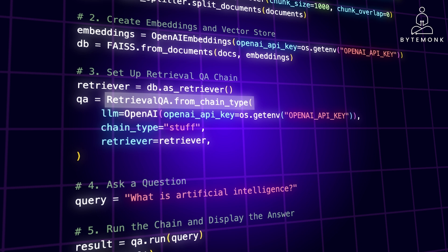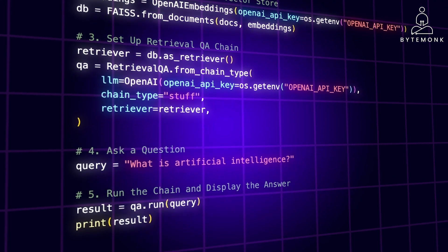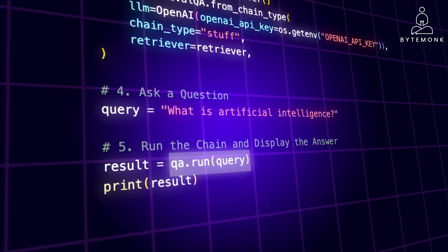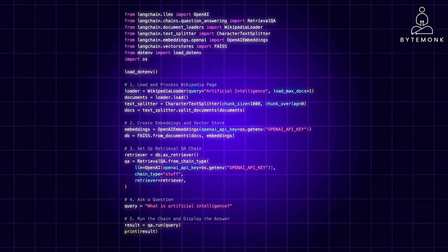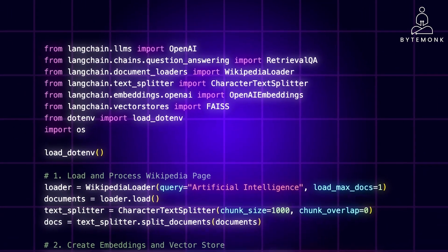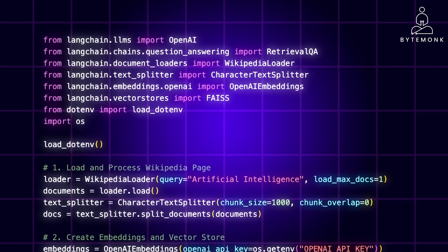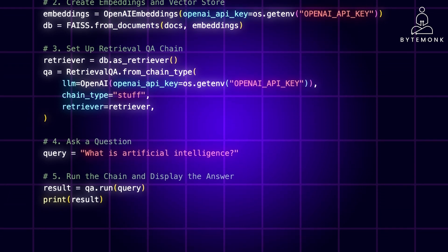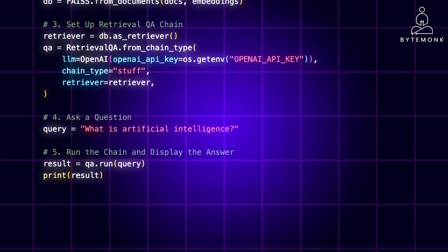RetrievalQA from chain type sets up the chain that takes the query, uses the retriever to find relevant documents, and then passes those documents and the query to the LLM to generate an answer. The user provides a question about artificial intelligence, and the qa.run method finds relevant document chunks in the vector store based on the query's embedding. Note that the LLM itself does not directly query the vector database — that task is handled by the retriever component in the RAG chain. The query is also passed to the LLM because it provides essential context, helping the LLM understand what the user is specifically asking. The result is then printed, which will be the LLM's answer to the question.